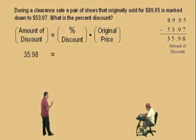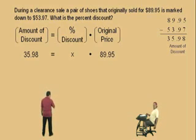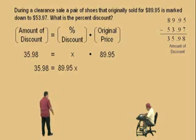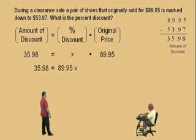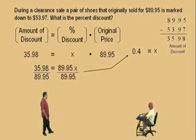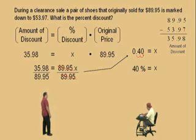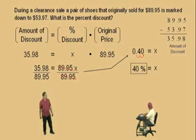Our percent discount is what we're trying to find, so we'll let that be x. And what was the original price, Charlie? $89.95. That's right. That's the price before the markdown. And so, remember, x times 89.95 is the same as 89.95x. And how do we solve this, Charlie? Divide by 89.95. That's right. Those cancel. Now, what's this quotient? 0.4. Very nice. And that's x. Now remember, we're trying to find a percent — the percent discount. Move the decimal to the right twice. Don't forget to put that placeholder there. And so our answer is 40%. That is our percent discount.